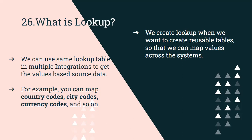In the lookup, we need two fields: one is country code and another is country name. When we send a country code to the table, we get the country name back, and when we send the country name, we get the country code. So we can use it in both directions — that is the use of lookup.